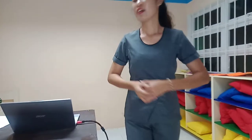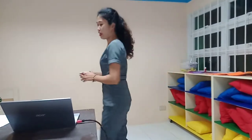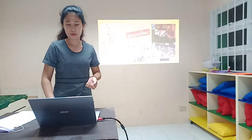Now we will have an activity. I will group you into five — row one is group one, row two is group two, and so forth. I have here a picture. What you are going to do is describe the picture. I will give you five minutes to brainstorm with your group. Here's the picture.